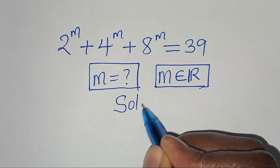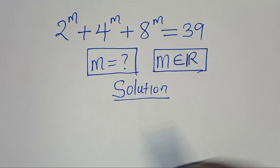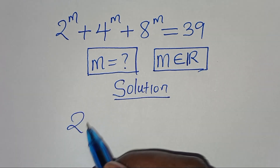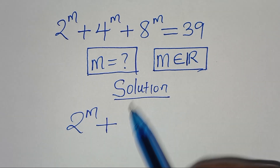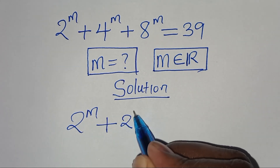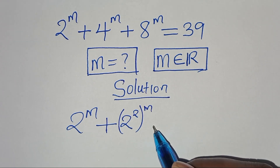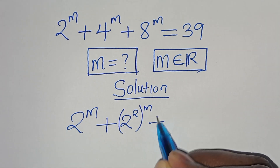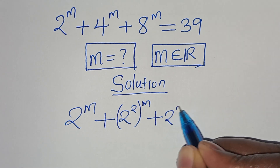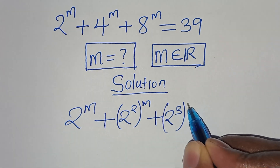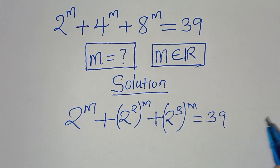Let's provide a solution. We have 2 to the power of m, plus 4 to the power of m, which we can express as 2 to the power of 2, then raised to the power of m. Then plus 8 to the power of m, which we can express as 2 to the power of 3, raised to the power of m. This is equal to 39.